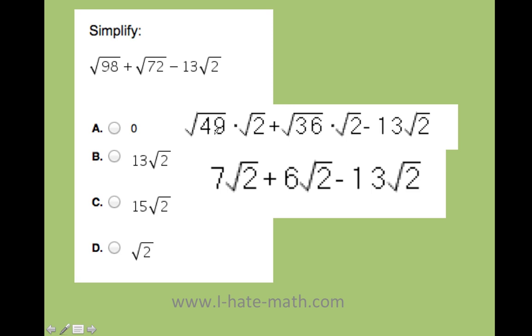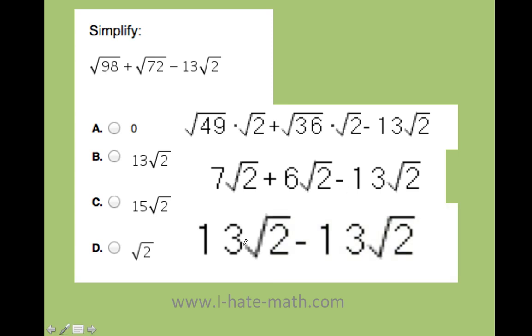Now, I know that the square root of 49 is 7, square root of 36 is 6, and then 13, I just leave it the same. Look how beautiful! I can now add and subtract every single term because everyone has the same square root. So let's do it. 7 plus 6 is going to be 13, and then 13 square root of 2 minus 13 square root of 2 is just 0.